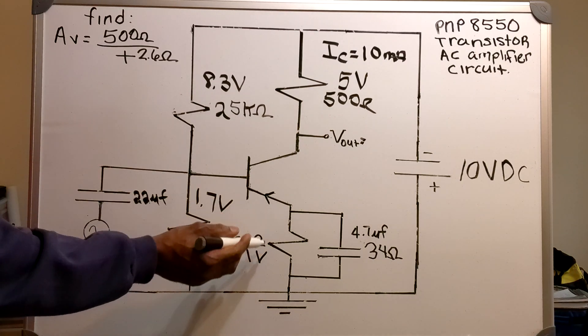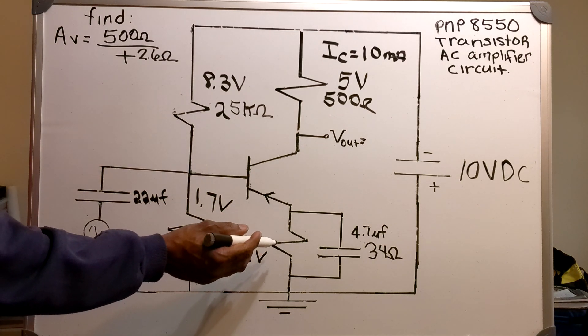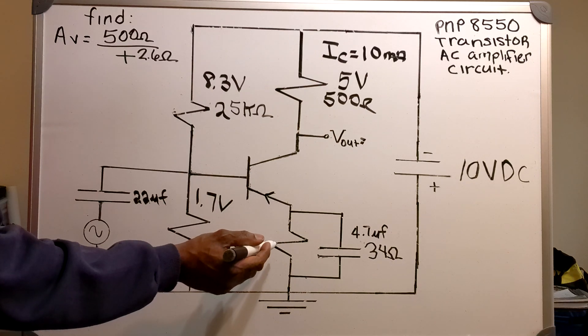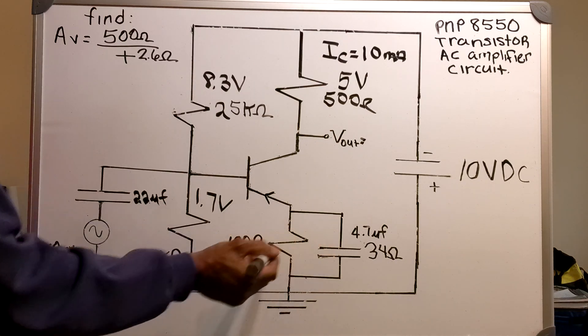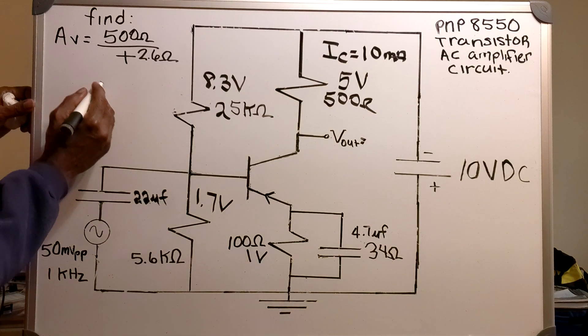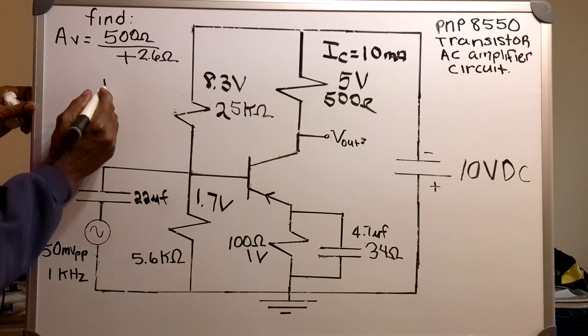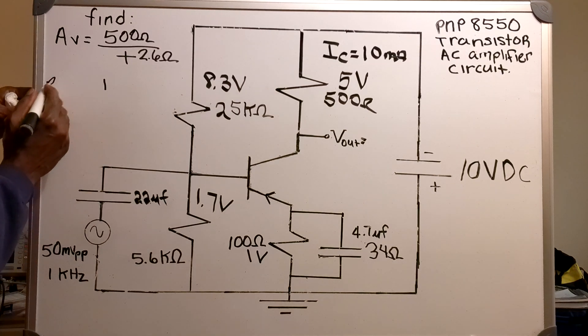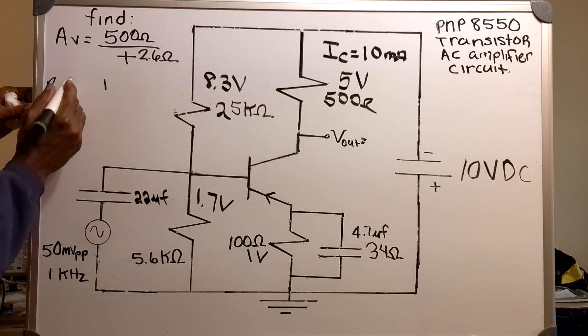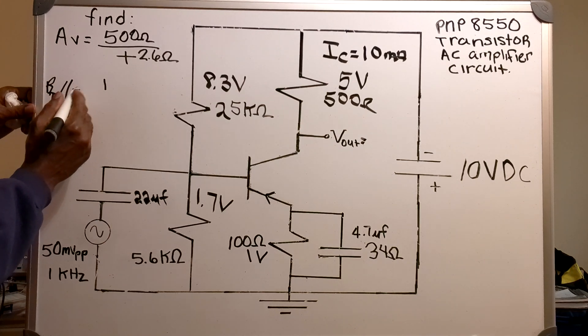Now, I will find the total resistance across my parallel circuit right here. That's RT. RT parallel equals...